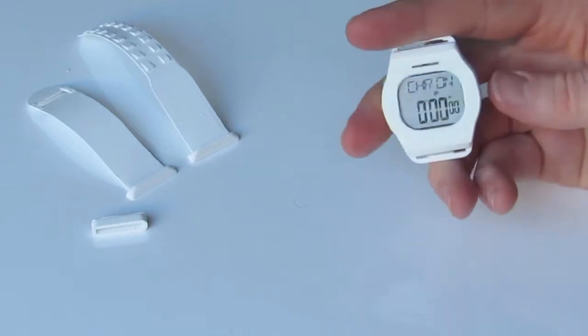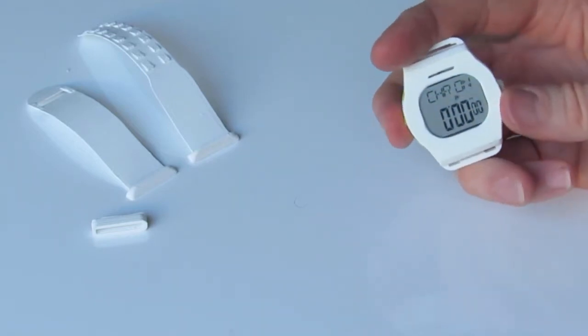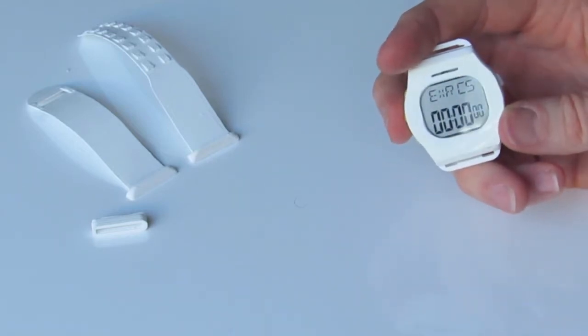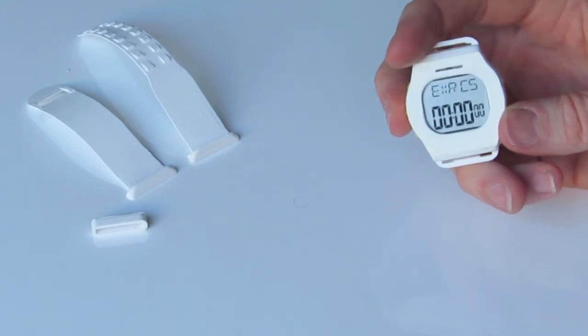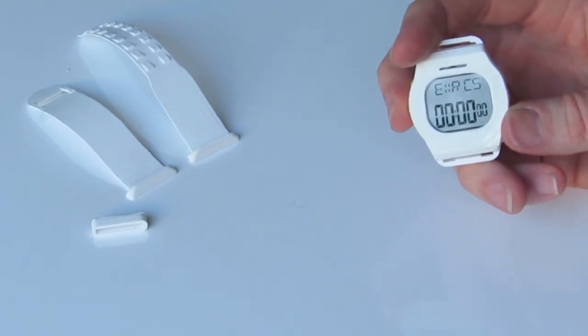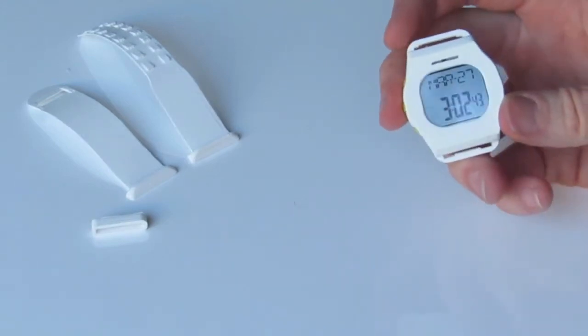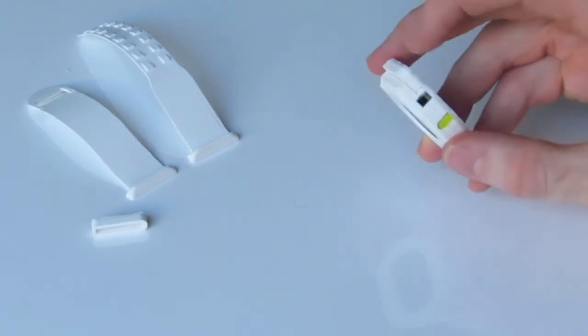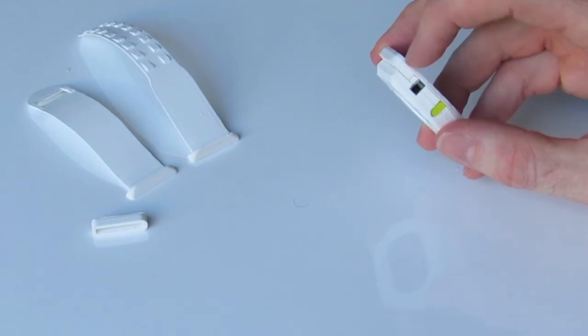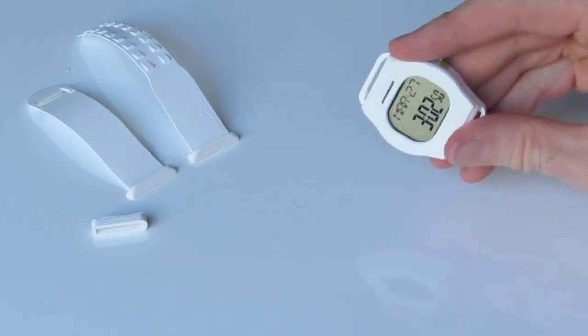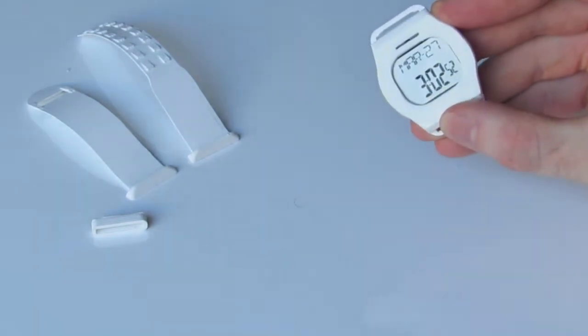And then our right hand button here is our set button which enables you to set the time and date and also your weight and your age and your sex as well. And then at the top right we have our heart rate sensor, which you simply put your finger over when you're in the heart rate mode.